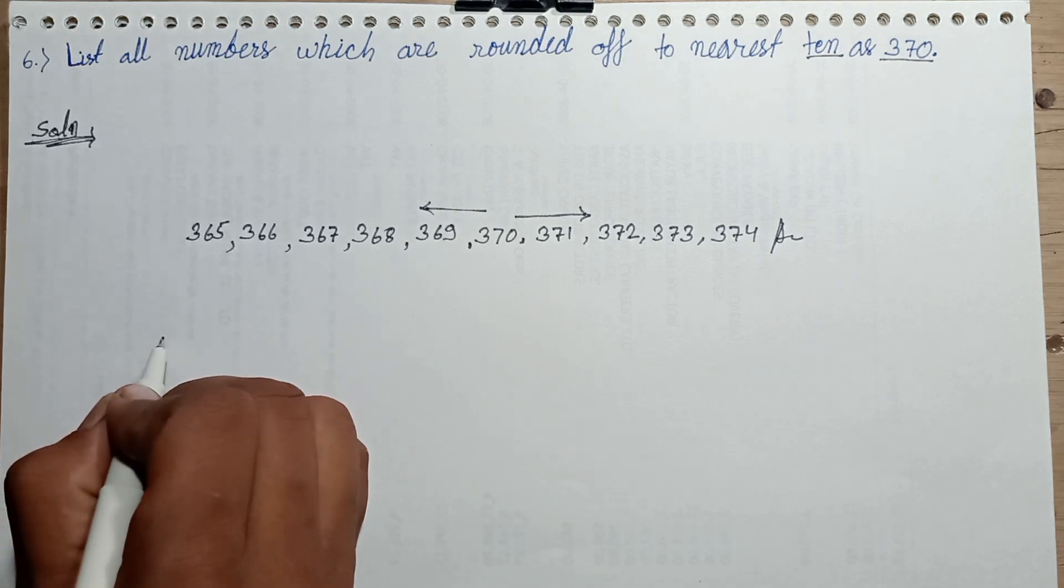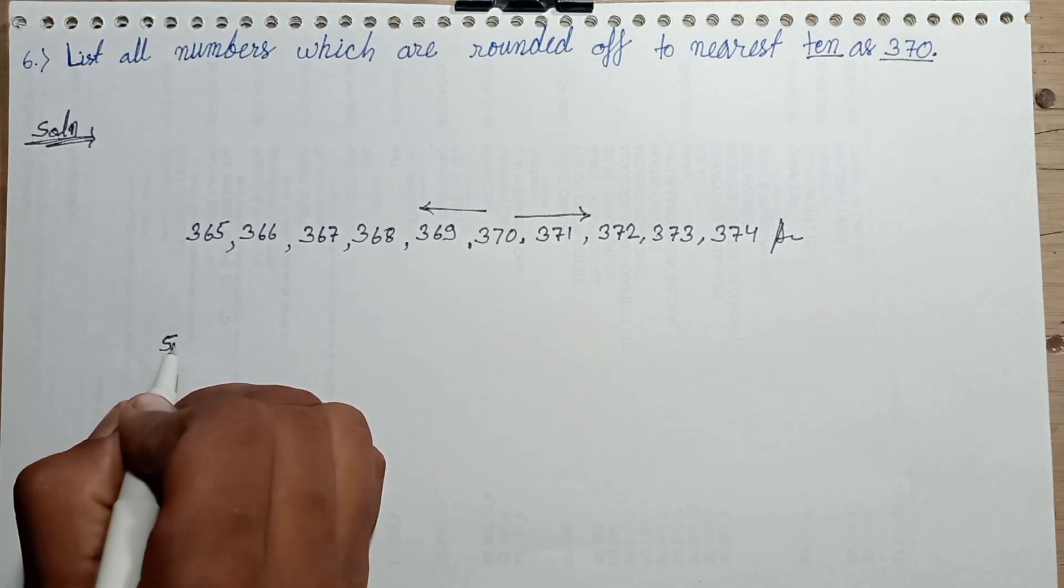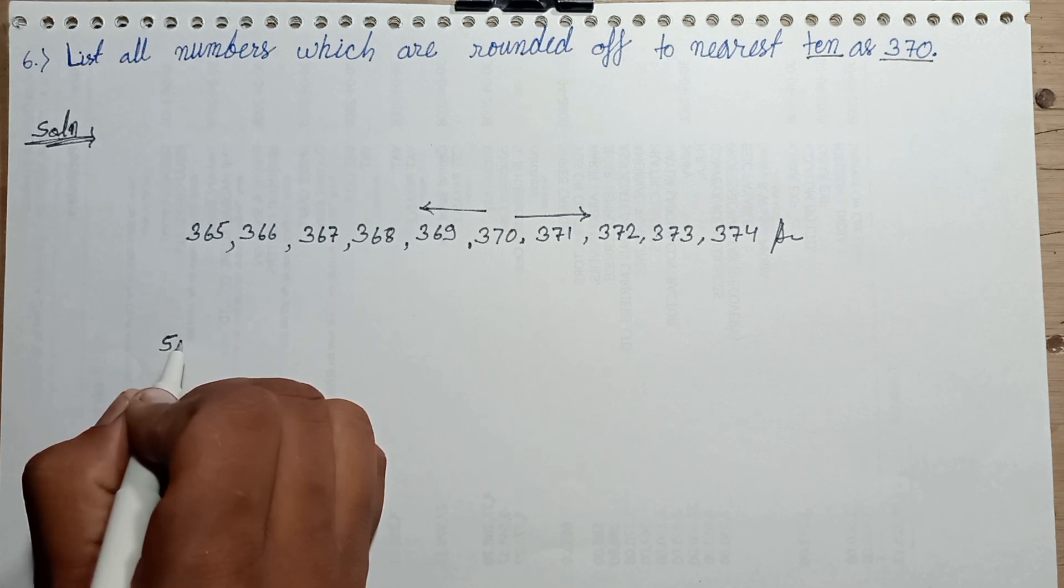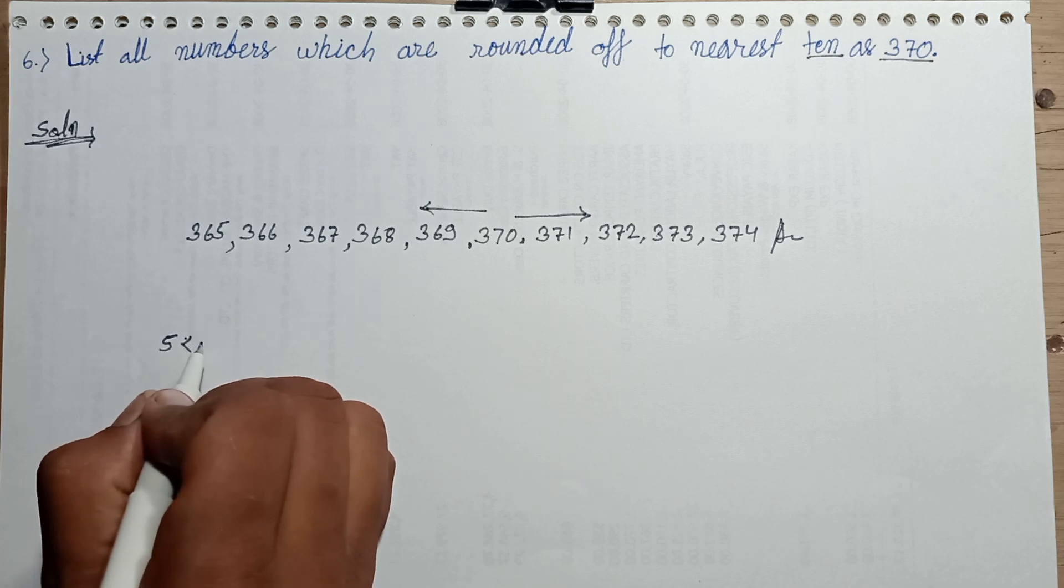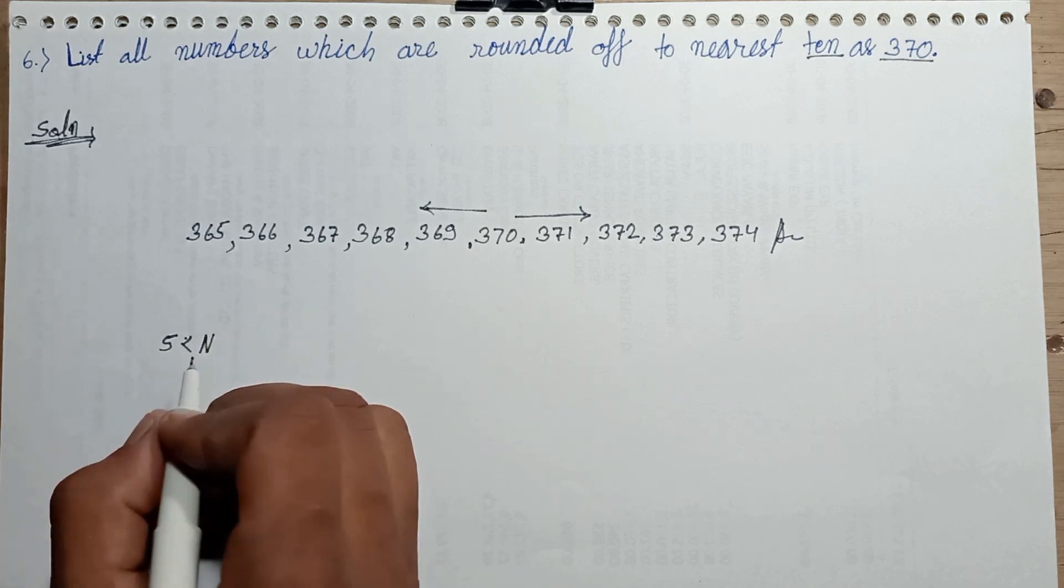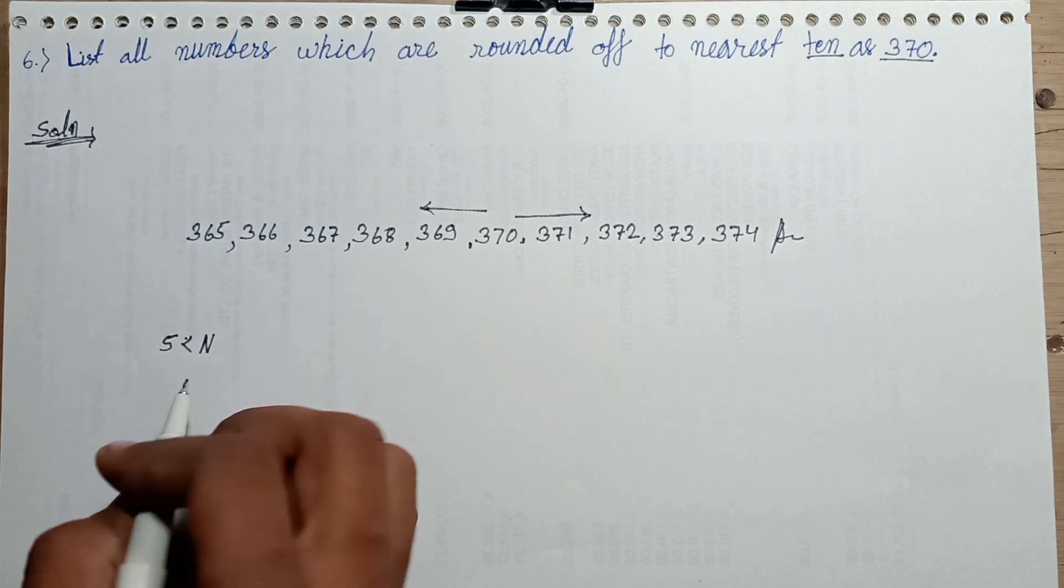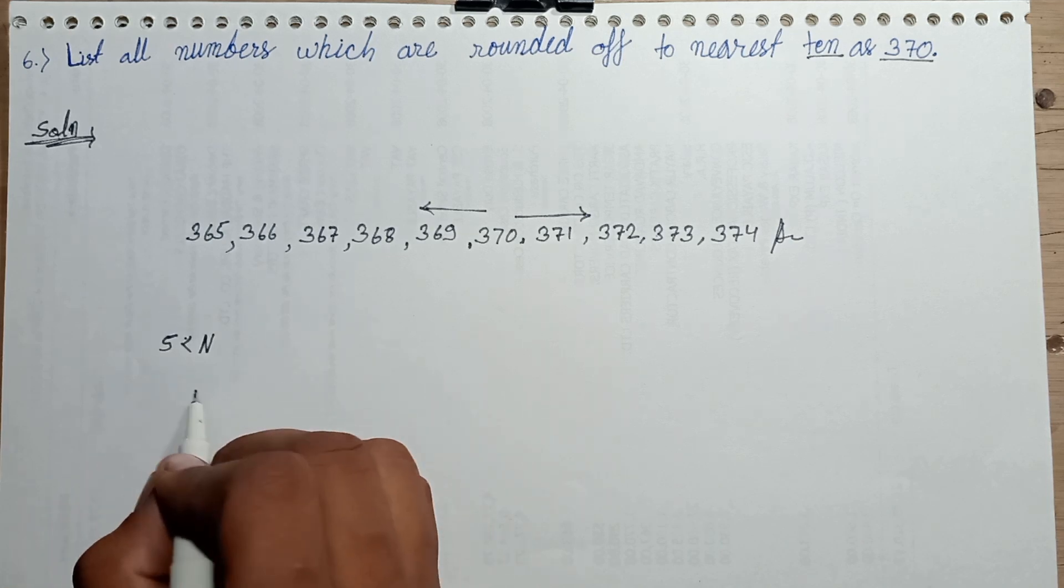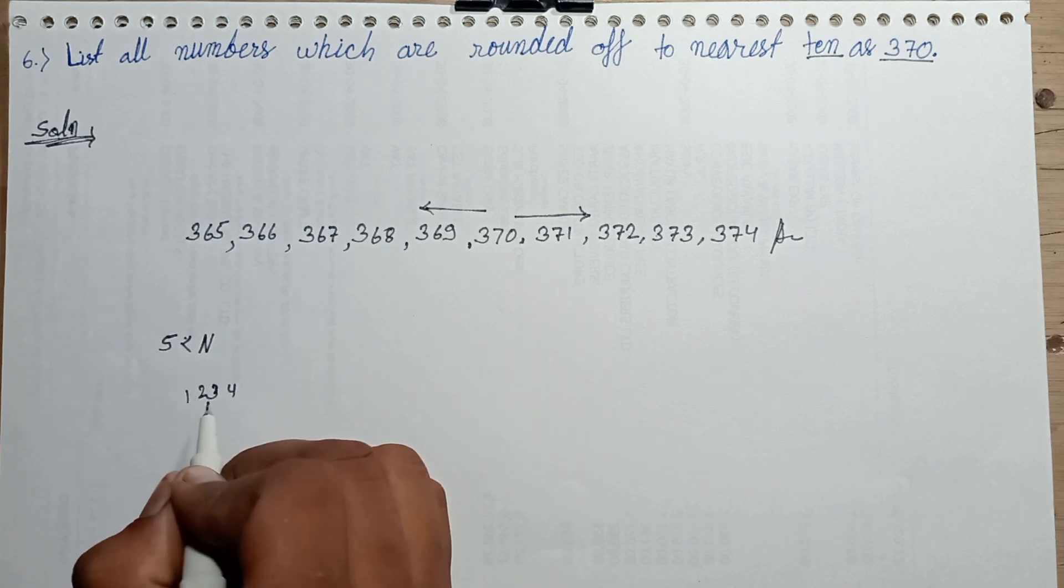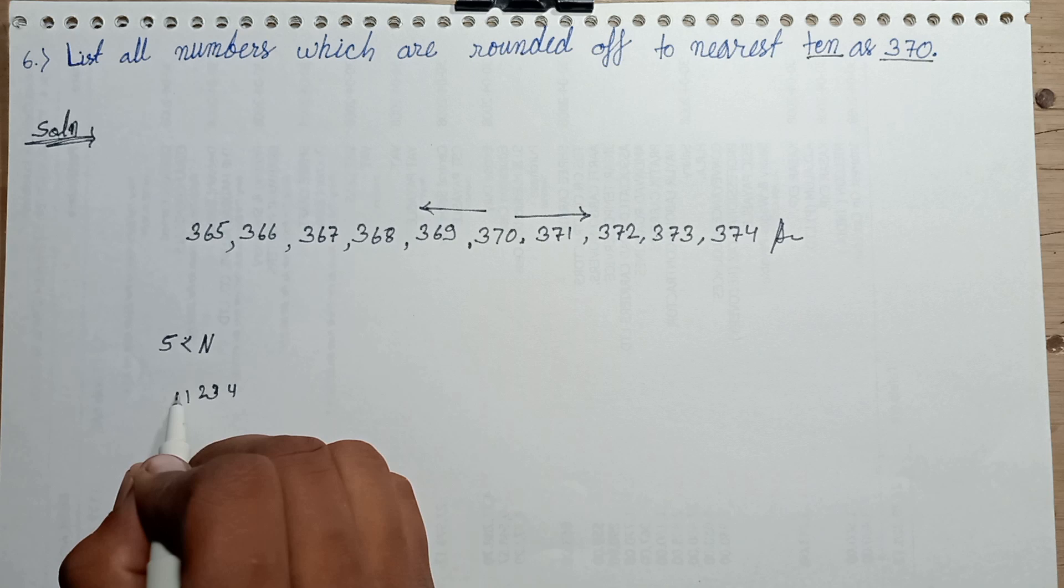Any number less than 5: nearest 4, 3, 2, 1, 0.